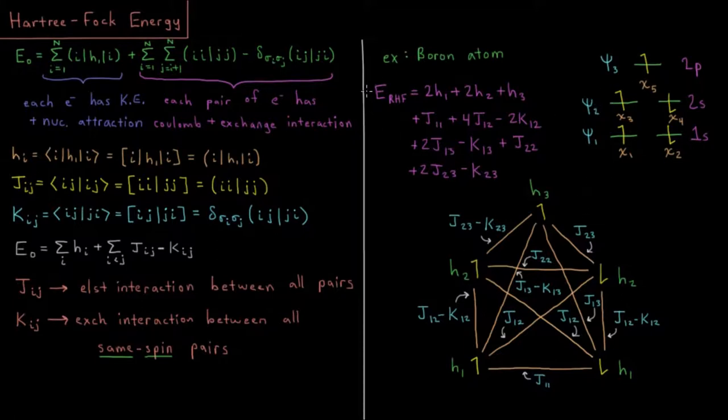So what is the restricted Hartree-Fock energy of this particular boron atom then? So we're assuming restricted Hartree-Fock, meaning that our electrons in psi1 have to have the same spatial orbital as they do in psi2. So those are restricted to be the same there.